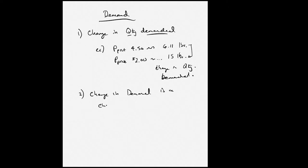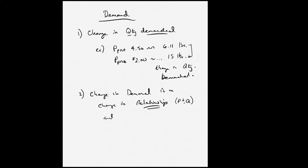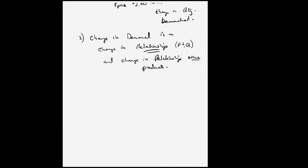The second is a change in demand itself. This is a change in the complete relationship of the demand curve — not just between price and quantity, but a whole new relationship. Price and quantity are the variables of demand, but you have two ways to look at it: a change in quantity demanded, or a change in demand itself. Both of these are relationships, but now I'm focusing on the second one — the relationship between the factors of demand.